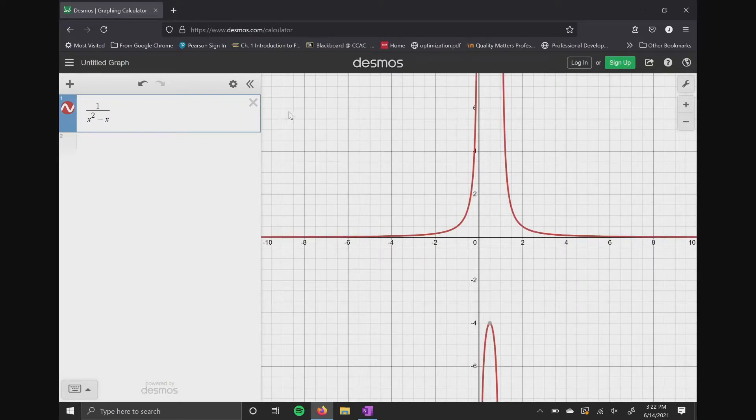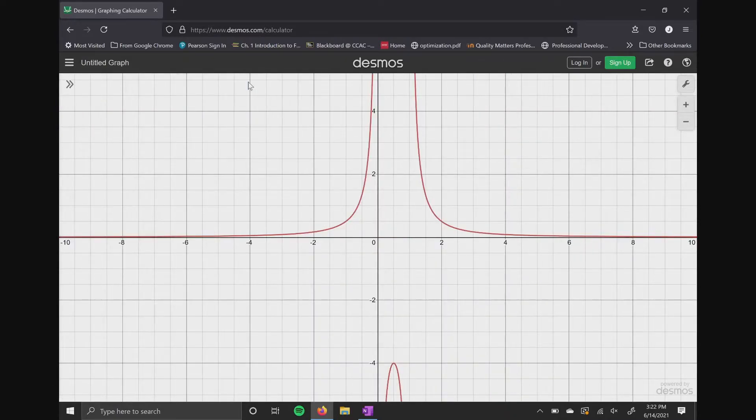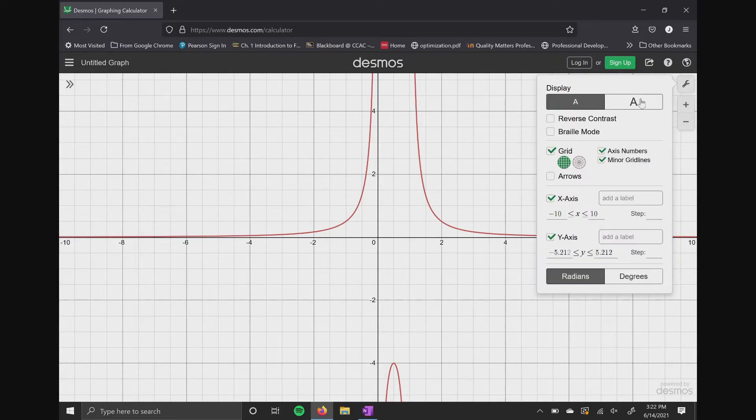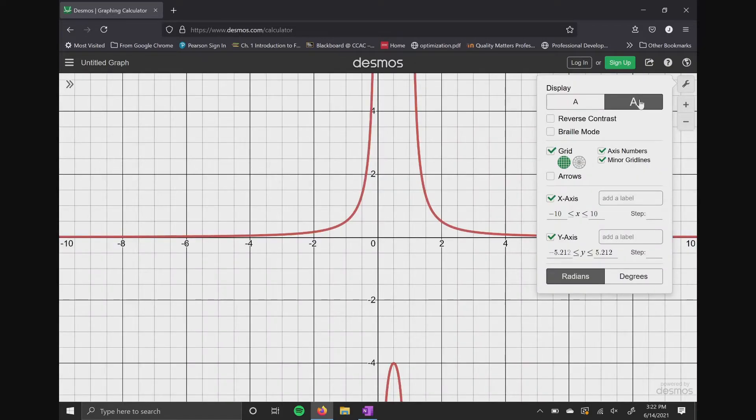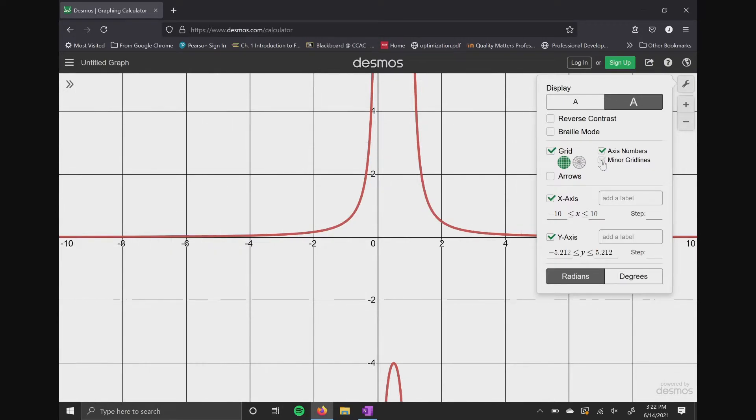Now here's our graph. To change this in Desmos in terms of the window that they want, you're gonna go over here to the toolbar. You're gonna click on the tool. I'm gonna change my display so it's a little bit brighter. I'm gonna get rid of a lot of this stuff because I think this is just very busy. So the minor grid lines, let's get rid of that. I like the axis numbers. I like the grid.